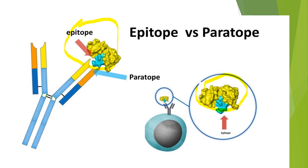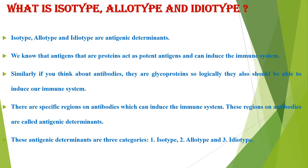It is a very interesting subject. Let me start with isotype, allotype, and idiotype. These are exactly the same antigenic determinants, like epitope and paratope — describing how the antibody and antigen interact, how they join and bind, and which area they bind. These are the different forms of antigenic determinants.